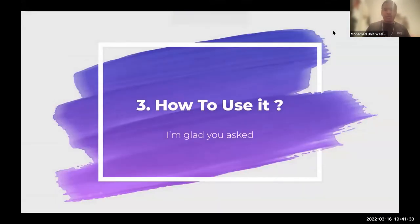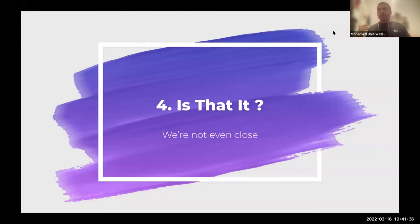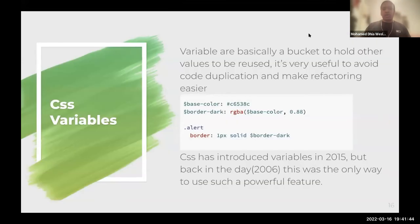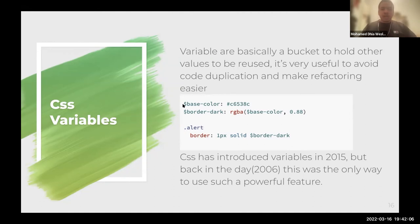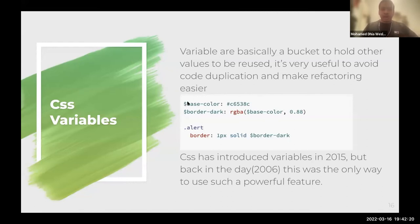So, is that it? No, we're not even close to scratching the surface. There's a lot more stuff that SCSS offers. Number one, and also one of my favorites: variables. CSS variables are basically a bucket to hold other values to be reused later. It's very useful to avoid code duplication, avoid rewriting the same thing twice, and makes refactoring easy. Any variable in SCSS and SASS starts with a dollar sign. For example, '$base-color' is a variable holding a hex color value, and '$border-dark' is another variable holding an RGBA color with 0.88 opacity.